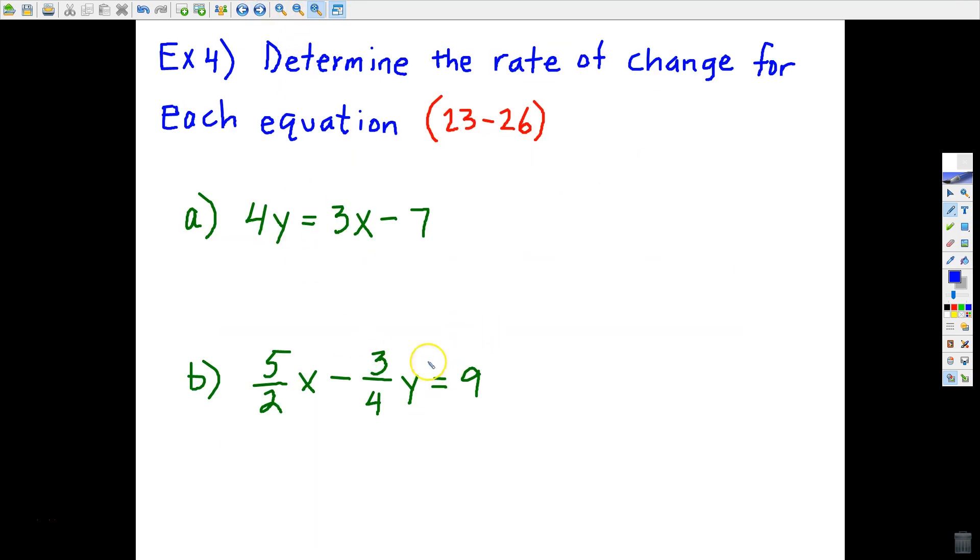We're almost done. This last block of problems, 23 through 26, look like this. Can we determine rate of change if all we are given is an equation for a line? Well, sure we can. If, it's easy to do, if we could just change this equation into slope-intercept form.